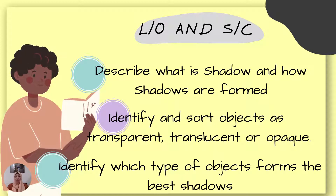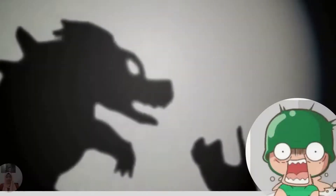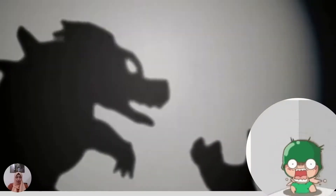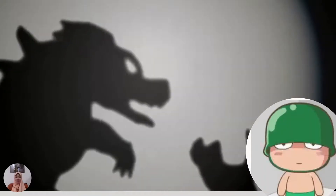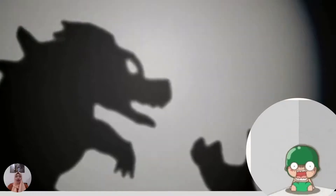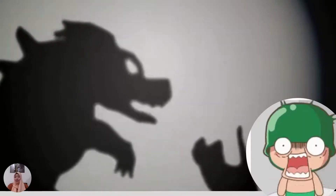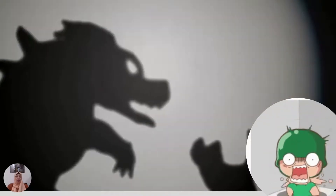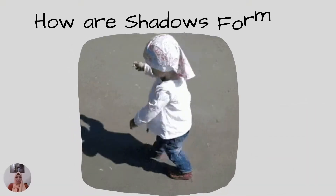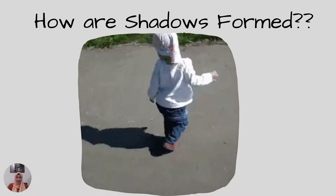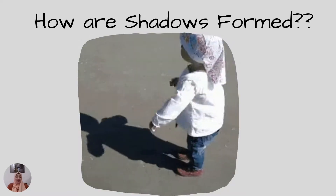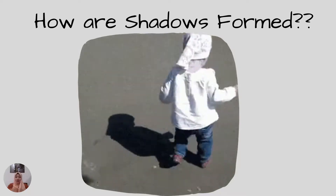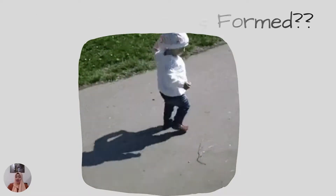From here we understand that some objects cannot form good shadows. Don't panic and don't be afraid — this is nothing but shadow, like a puppet shadow show. Look at this cute girl here. She is afraid of her own shadow because she doesn't know how shadows are formed. So let us learn today how these shadows are formed.